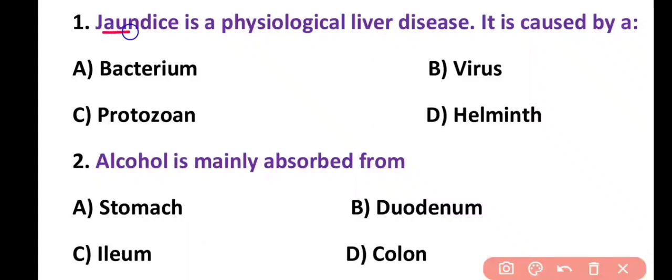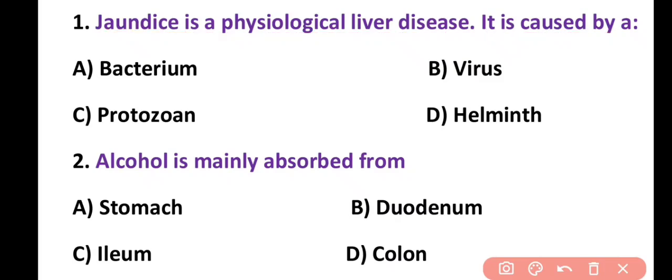Question 1. Jaundice is a physiological liver disease. It is caused by: bacterium, virus, protozoan, or helminthus. Correct answer is option B. Jaundice is a physiological liver disease and it is mostly caused by the infection of the liver by a virus — hepatitis A, B or C virus. So the correct answer is option B.